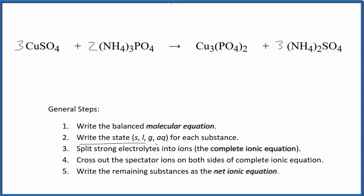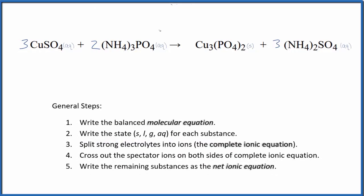Next, we need to write the state for each substance based on the solubility rules. That'll give us this. So in general, sulfates are soluble, so these will be aqueous, dissolved in water, dissociate into their ions. Phosphates are usually insoluble, but ammonium compounds are very soluble. So ammonium phosphate, that'll be soluble.